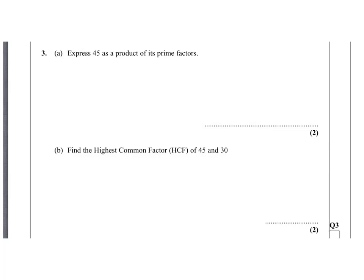Question 3a. We need to write 45 as a product of its prime factors. We know that 45 is 3 times 15, and 15 is 3 times 5. 3 and 5 are prime factors of 45, so 45 equals 3 times 3 times 5.